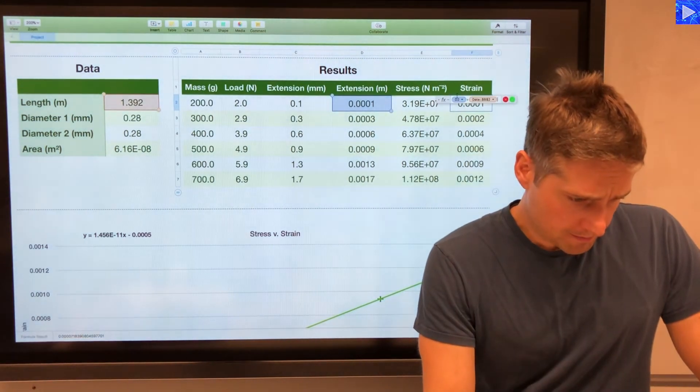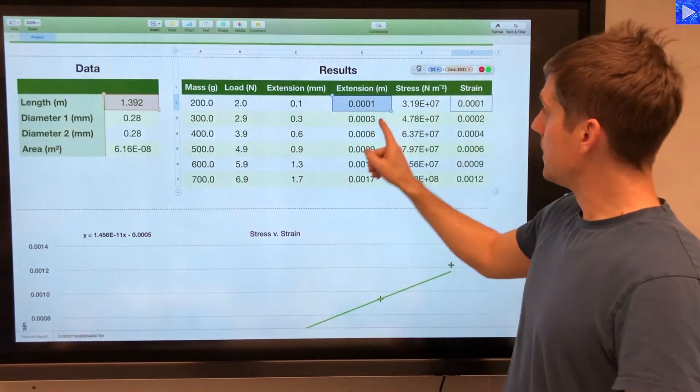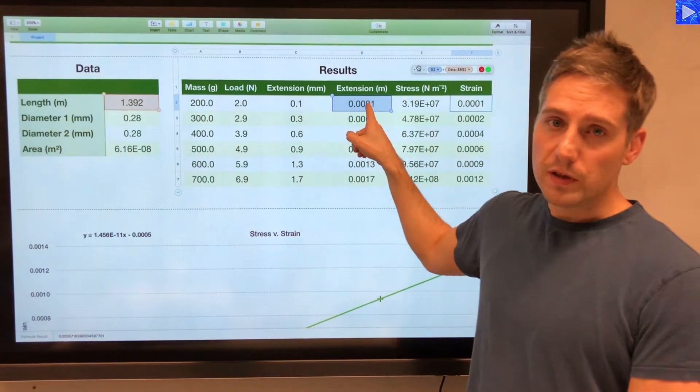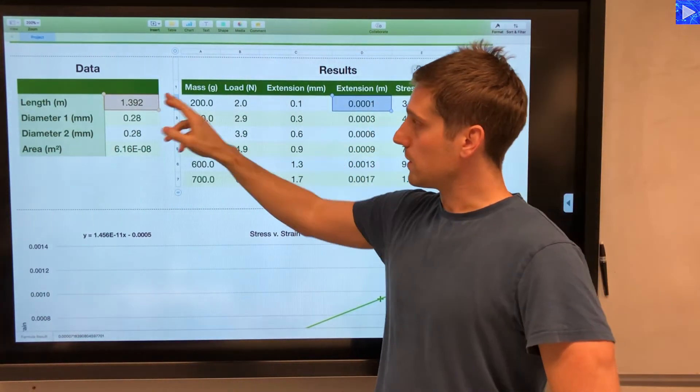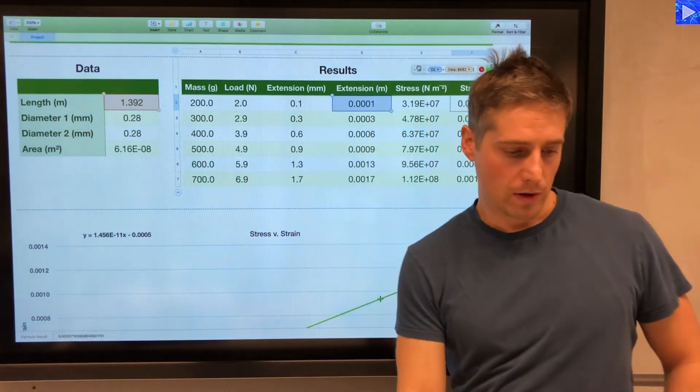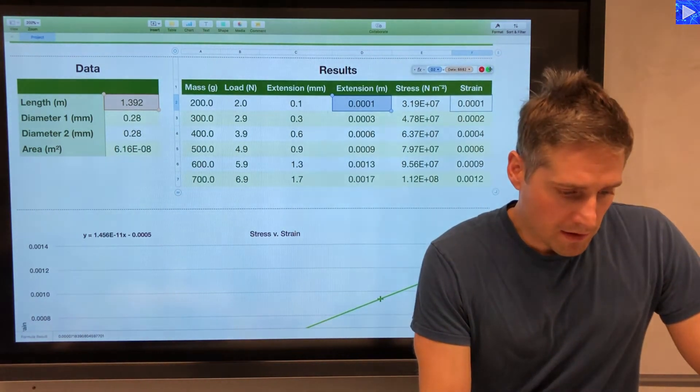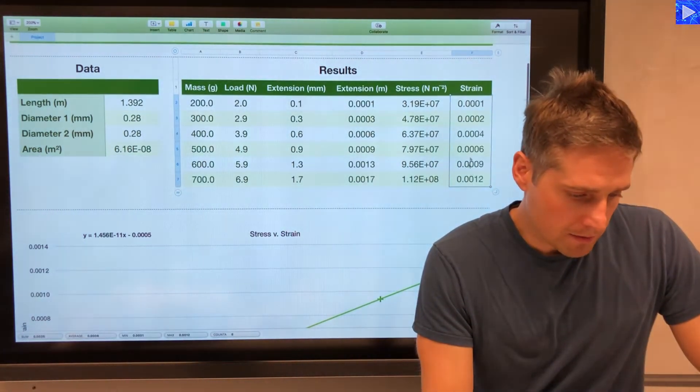So if I click in here, you can see there's the cell reference for the extension. This is the fixed data reference for the original length. So accept that, and then I just filled that down before.